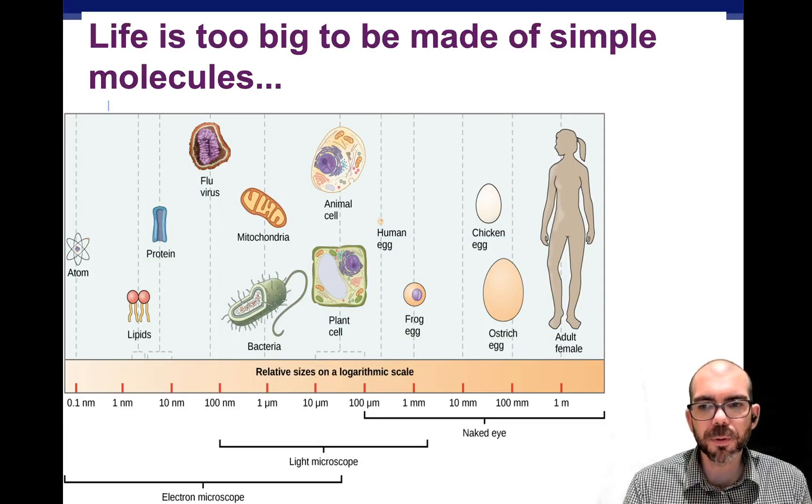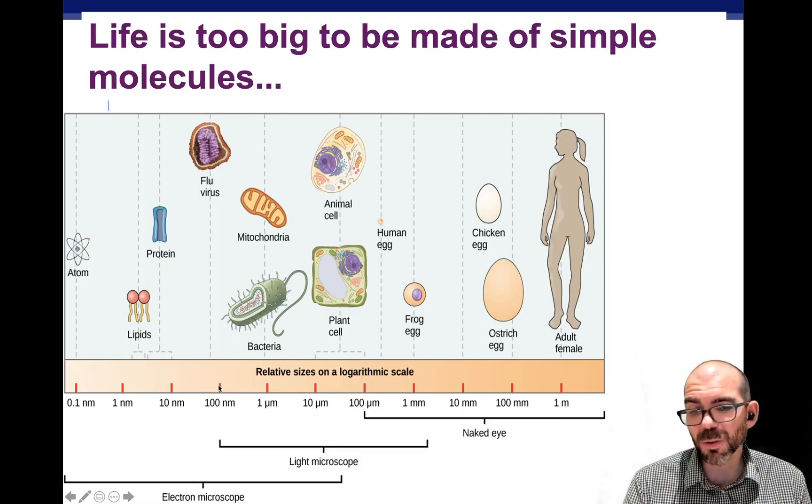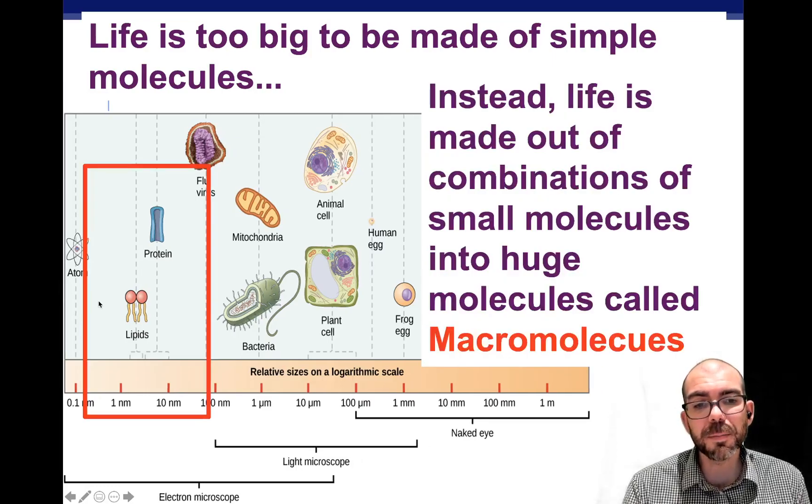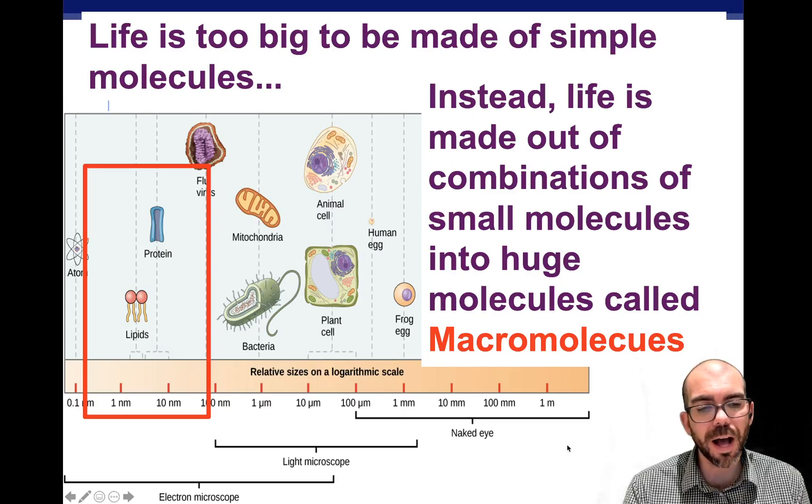Life is too big to be made of simple molecules. If you look at the scale proportion and quantity in this image, you can see that an atom is only about 0.1 nanometers. Lipids and proteins are between 1 to 10 nanometers. A virus doesn't even get to about 100 nanometers, and we have to go upwards to a micrometer to reach bacteria, some of the smallest living things that we've currently discovered. Then we get to micrometers for animal cells and plant cells, and up to millimeters and meters for things you can see with your naked eye, like an ostrich egg and a chicken egg.